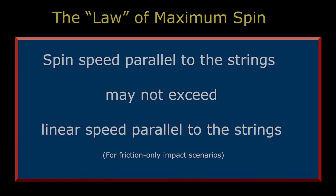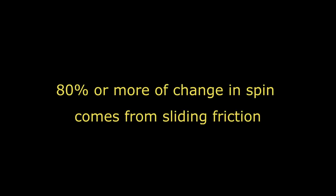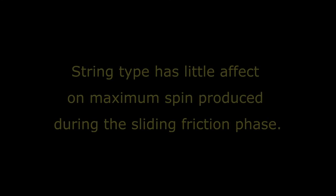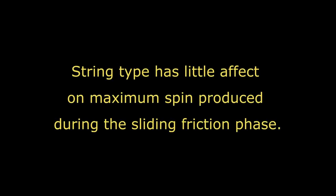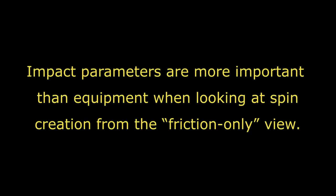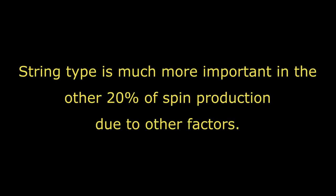So there you have it. About 80% or more of the change in spin comes from sliding friction independent of any other factors. And amazingly, string type has very little effect on the maximum spin produced for any given set of impact parameters during the friction-only phase of the impact. The impact parameters are more important than the equipment when looking at spin creation from the friction-only viewpoint. String type is much more important on the remaining 20% of the spin, which we will cover in another tutorial.